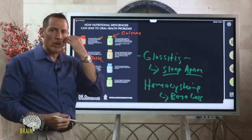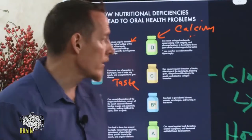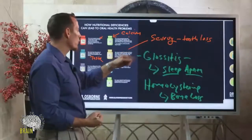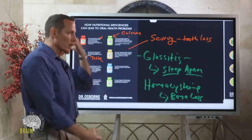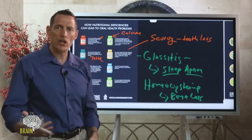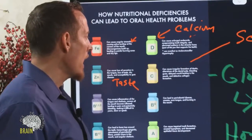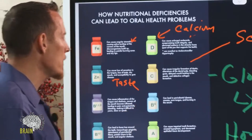Vitamin C is important for forming collagen — the material your gums are made from. Without adequate vitamin C, gum tissue can start to break down. Later-stage vitamin C deficiency is called scurvy, one side effect of which is tooth loss, because vitamin C helps produce the strong collagen that anchors teeth into the jaw. It can also cause irregular formation of dentin, alterations of dental pulp, bleeding gums, and delayed wound healing in the mouth.